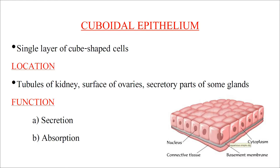Cuboidal epithelium is made up of a single layer of cube-shaped cells. They are located in the kidney, surface of the ovaries, and secretory parts of some glands. Their function is secretion as well as absorption.